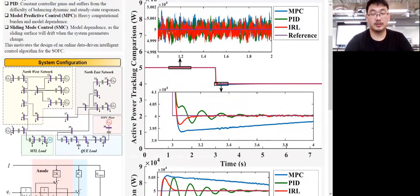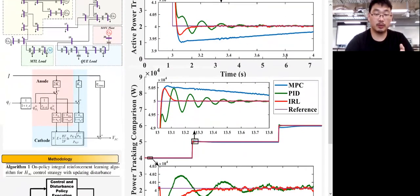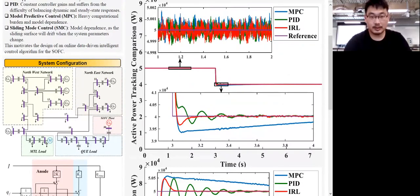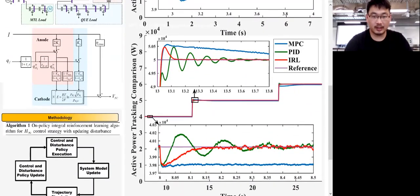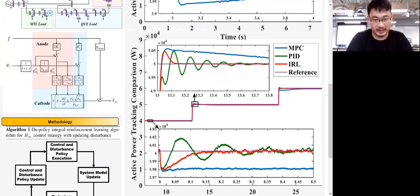These two figures show the active power tracking and output voltage tracking performance. In this figure, it's clear the temperature is changed from eight seconds. From this figure, it can be seen that the PID controller has a much longer settling time and the MPC cannot track the reference anymore.